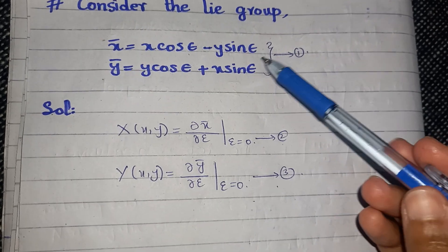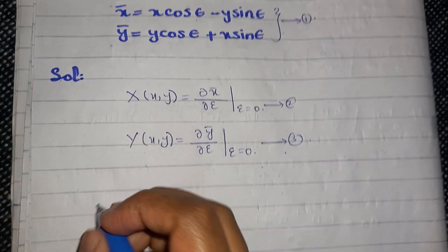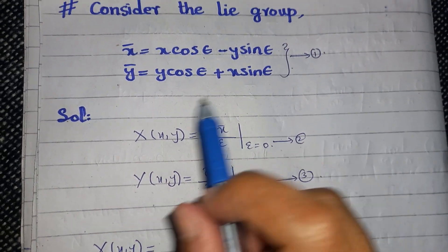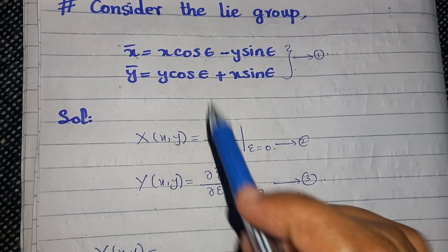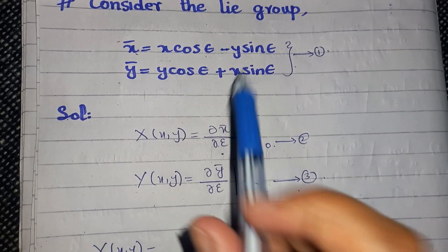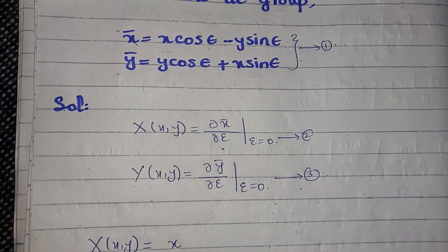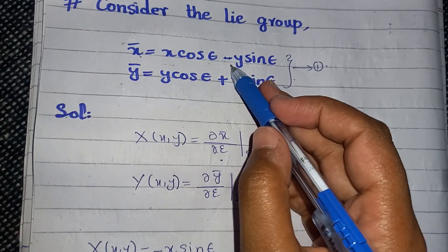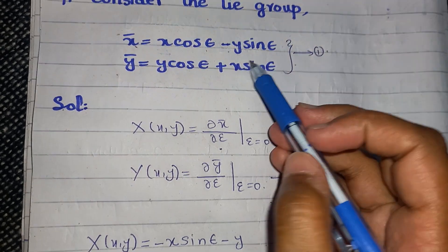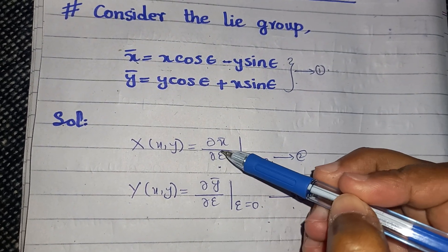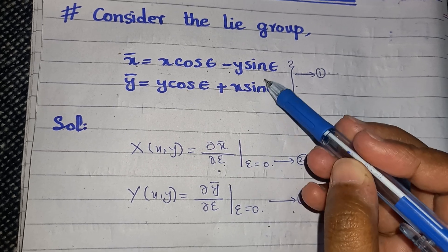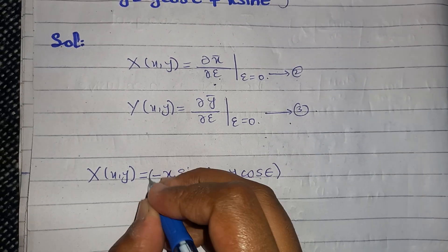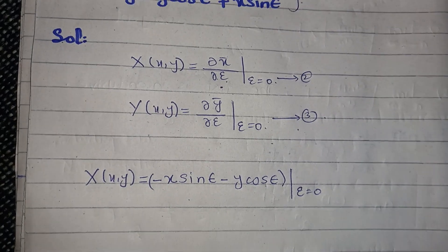Using equation 1 in equation 2, we can write capital X(x, y) by taking the partial derivative of x-bar with respect to epsilon. Since x is treated as a constant, we write x as it is, and the derivative gives a minus sine, so we get minus sine of epsilon minus y. Since y is treated as a constant, the derivative of sine epsilon gives cosine of epsilon, evaluated at epsilon equal to zero.